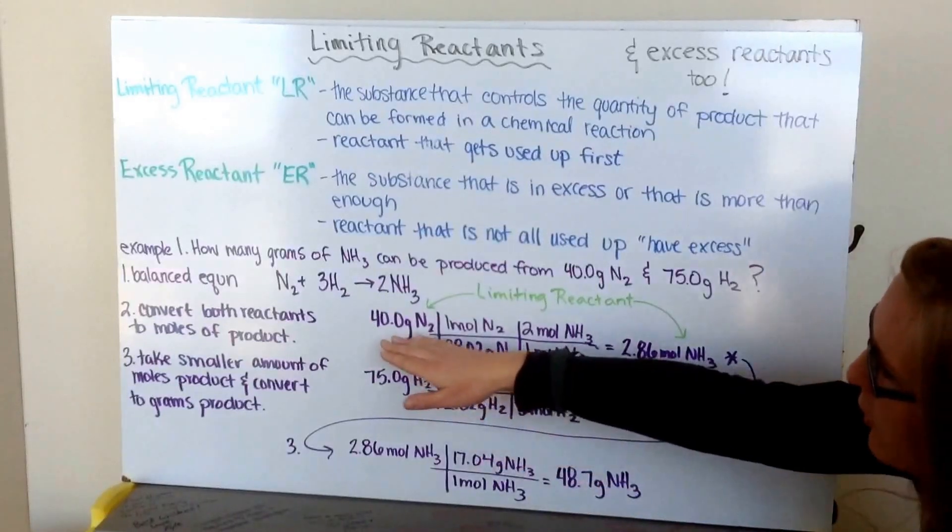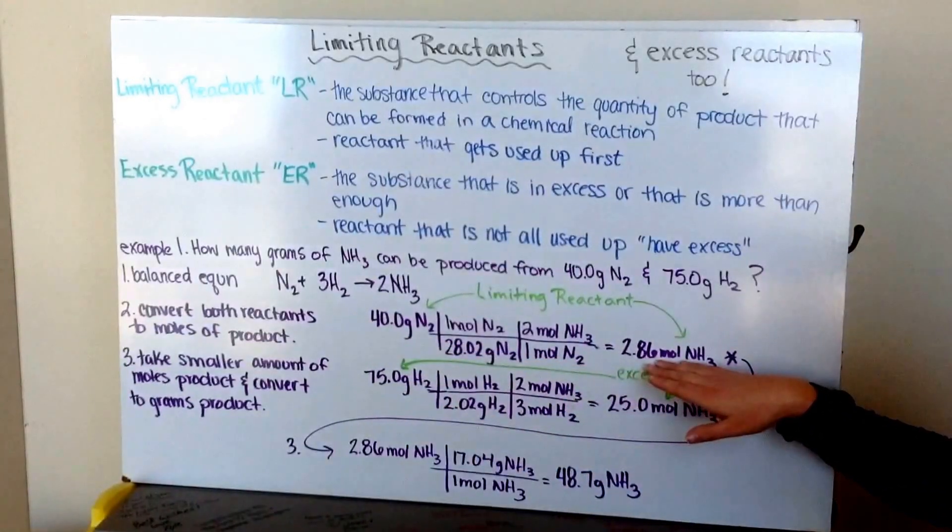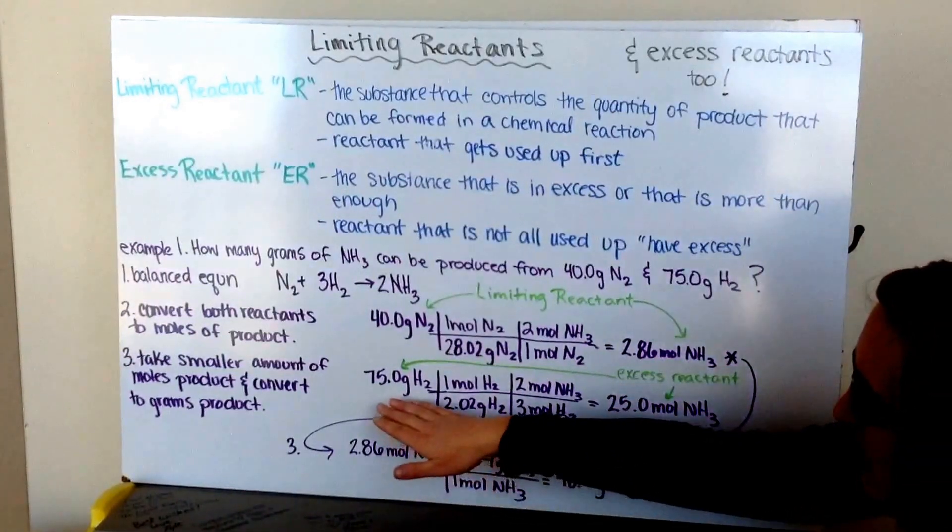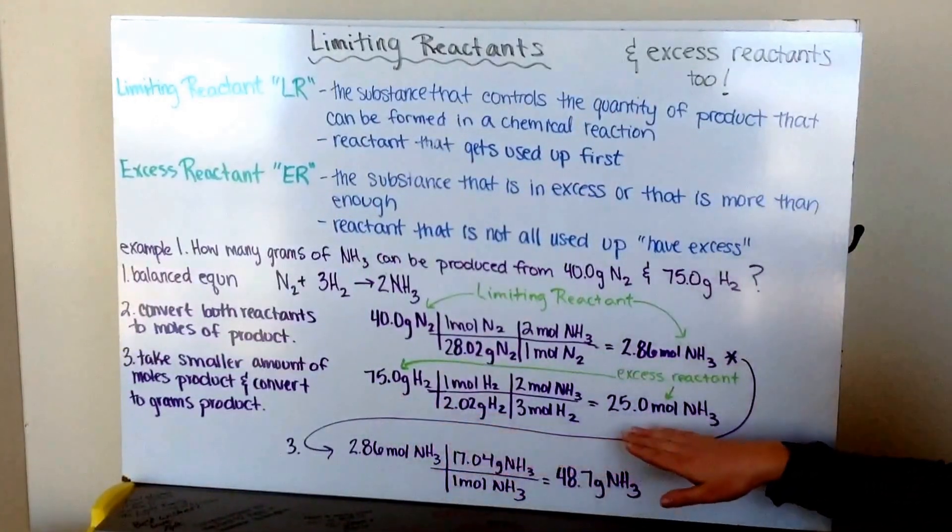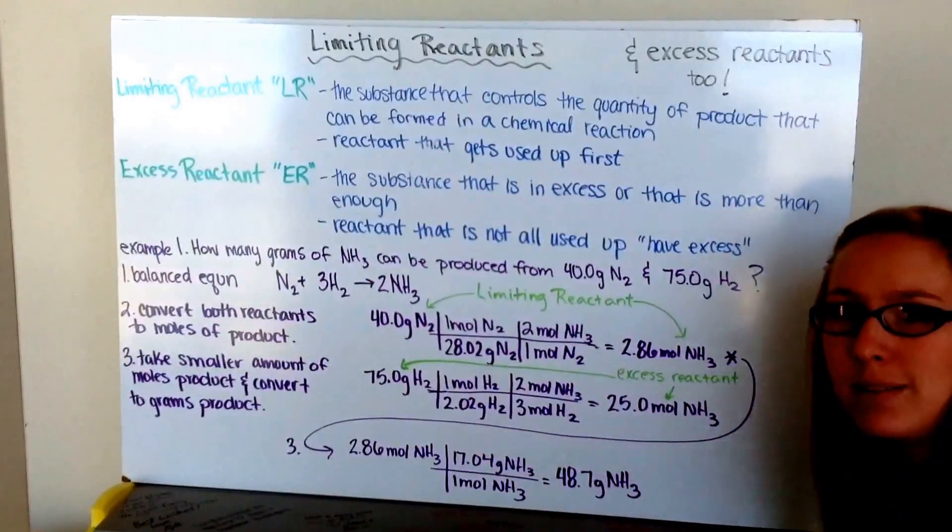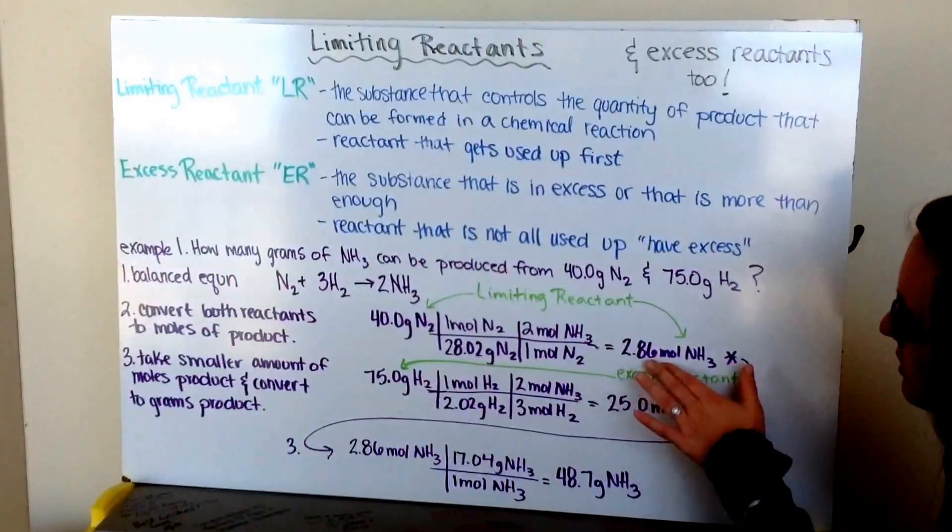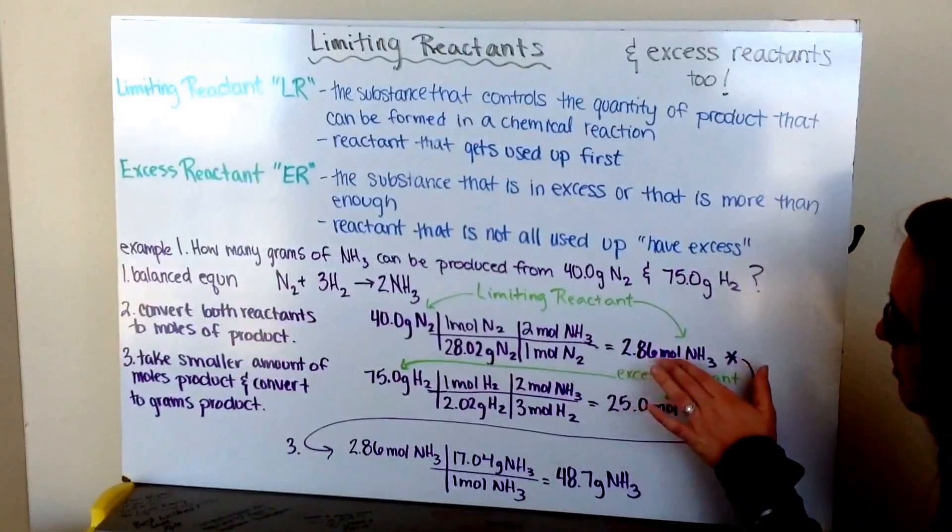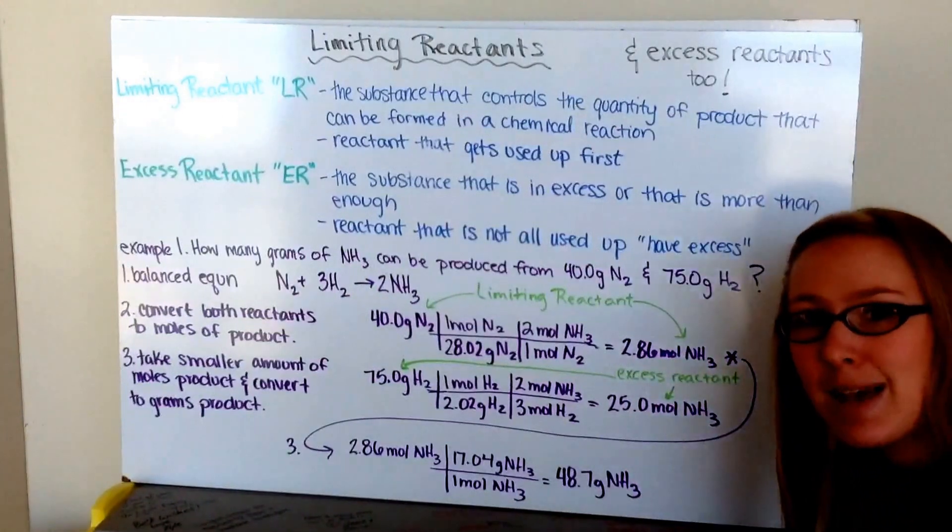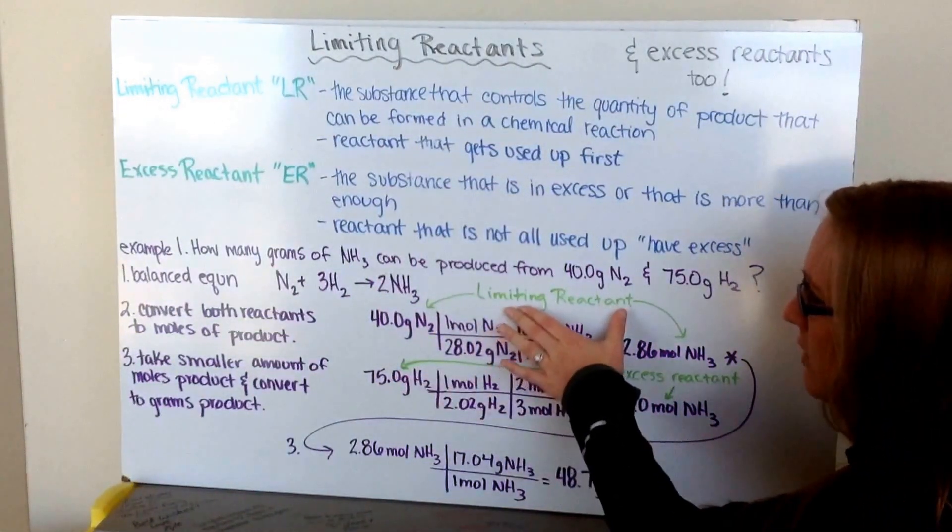So, with my 40 grams of nitrogen, I can make 2.86 moles of ammonia gas, and with my 75 grams of hydrogen, I can make 25 moles of nitrogen gas. Now, I can only make as much as my limiting reactant allows me to. So, therefore, I'm only going to be able to make 2.86 moles of ammonia, because once I've made that much, all of my nitrogen has been used up. So, this is my limiting reactant.